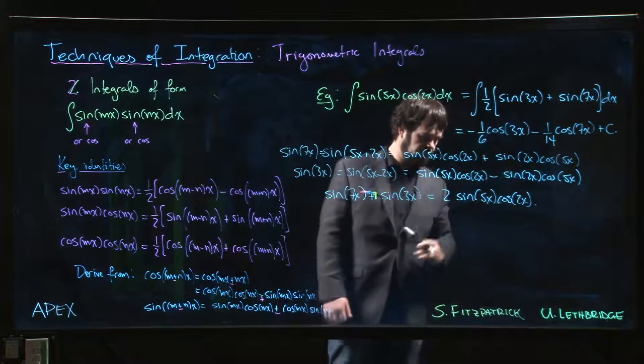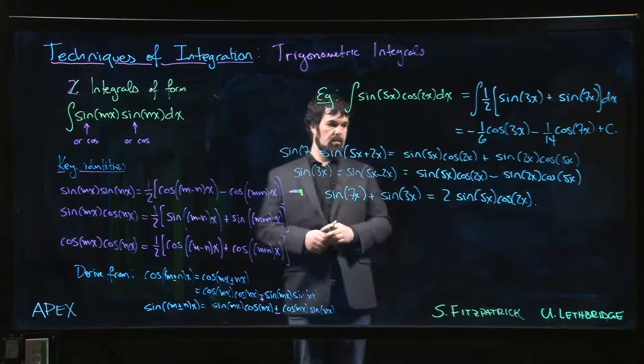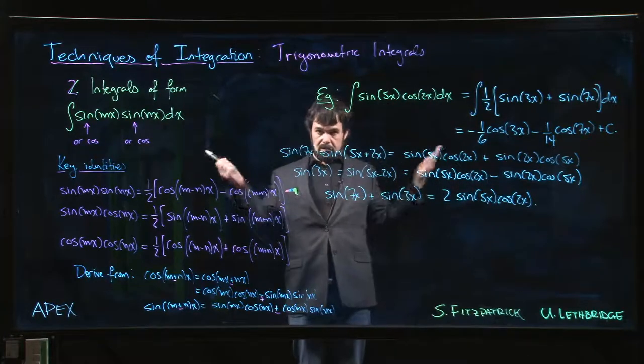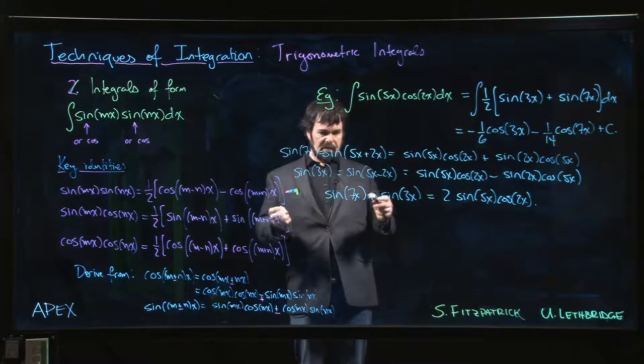Cos 2x. And divide by 2, you've got the identity and you proceed.